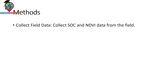First of all, we need to collect some field data. We collect soil organic carbon data as well as NDVI data at the same geolocation from our field. We can get the NDVI data from satellite imagery — you can use Landsat or Sentinel imagery. For the same geolocation, we also collect soil organic carbon data from the field and identify it through laboratory testing. You can take field data from your cropland or a specific boundary.